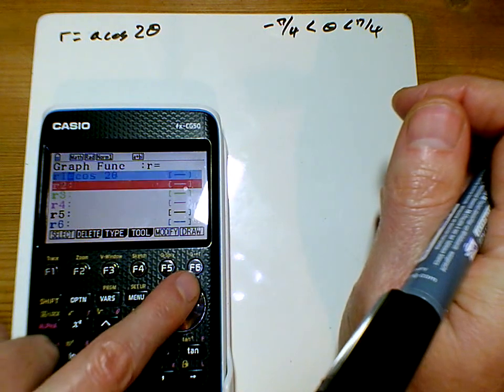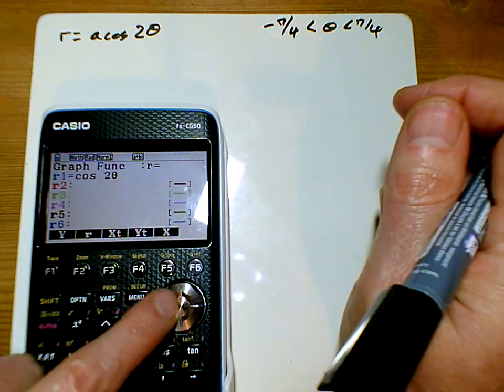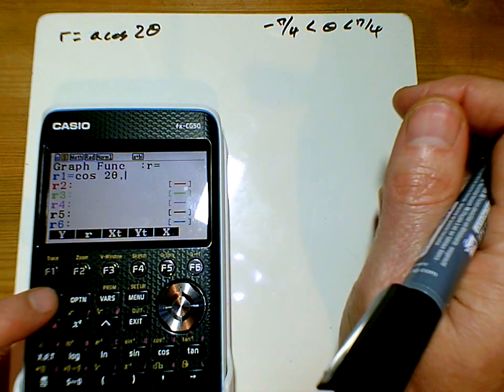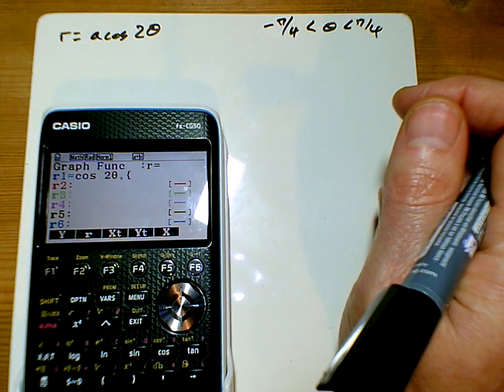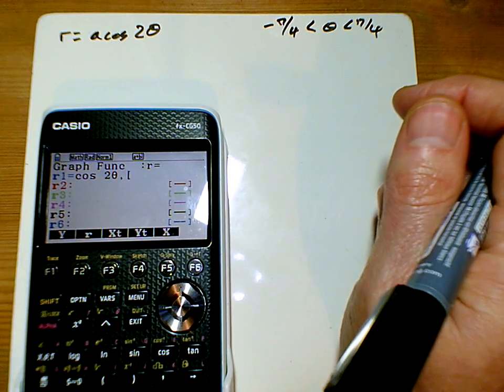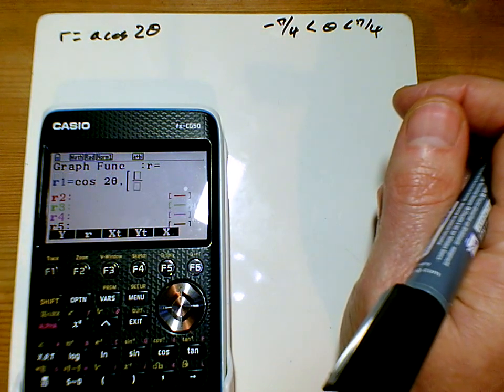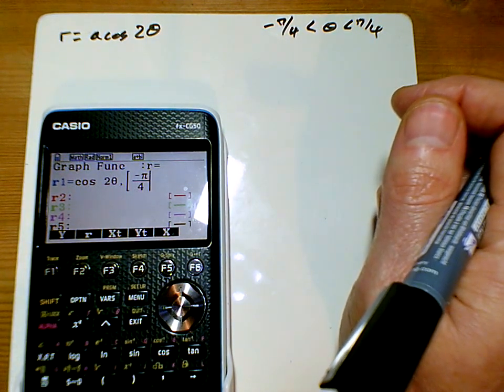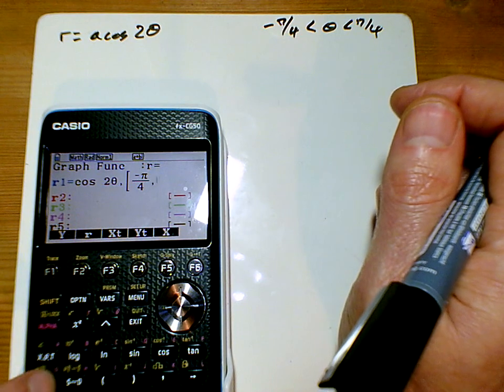So it might be a good time to remind you how to do this. What we do is we edit this function here, we put a little comma after it, and we use these square brackets, not that curly bracket, the square bracket here on the plus, and we're going from minus π over 4, and we need to go all the way up to comma π over 4.